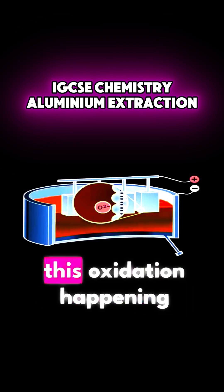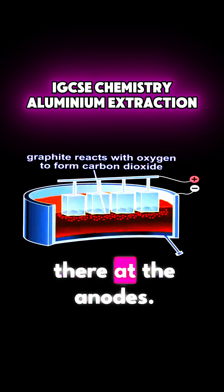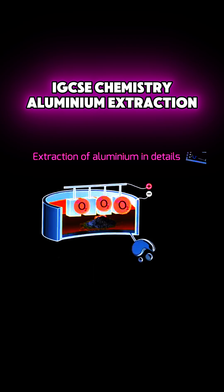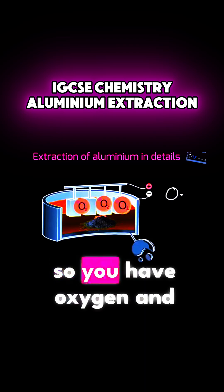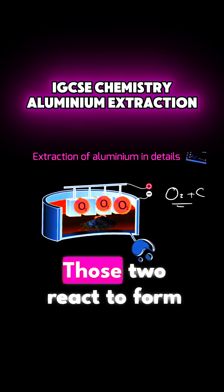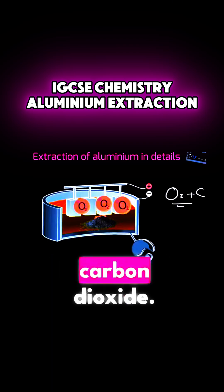Something happens while this oxidation is happening there at the anodes. When oxygen forms at the anode, it actually reacts with the anode. The anode is made up of graphite. So you have oxygen and carbon from the graphite. Those two react to form carbon dioxide.